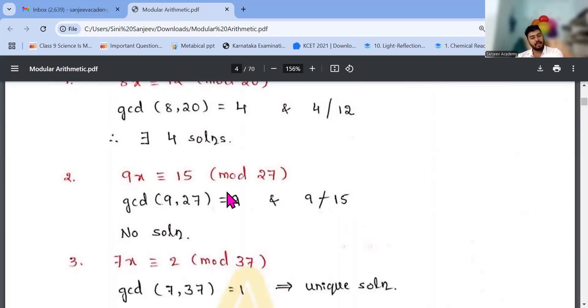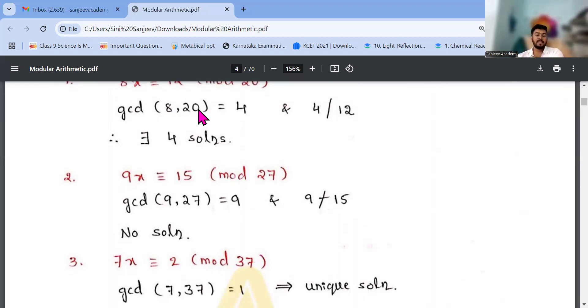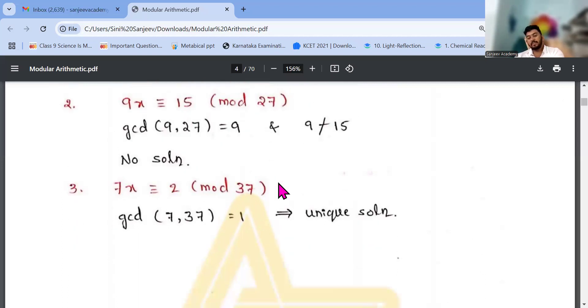9x equals 15. gcd of 9 and 27 is 9. 9 is the biggest. So here also, if you don't know gcd, 8 and 20, gcd is 4. 4 times 5 is 20 and 4 times 2 is 8. So obviously 4 is the greatest common divisor. And here it is 9. 9 times 1 is 9 and 9 times 3 is 27. And 9 divides 15. 4 divides 12, yeah, 4 solutions are there. 9 divides 15, no solutions are there. 7x congruent to 2 mod 37. gcd 7, 37. So unique solution.